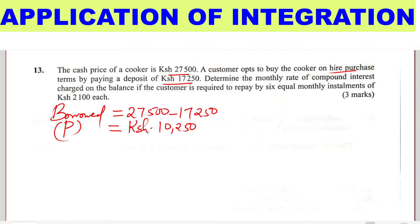This is the principal, the money that has been borrowed. We need to determine the monthly rate of compound interest charged on the balance if the customer is required to pay six equal monthly installments of $2,100 each. From this statement, we can get the amount that will be paid back.